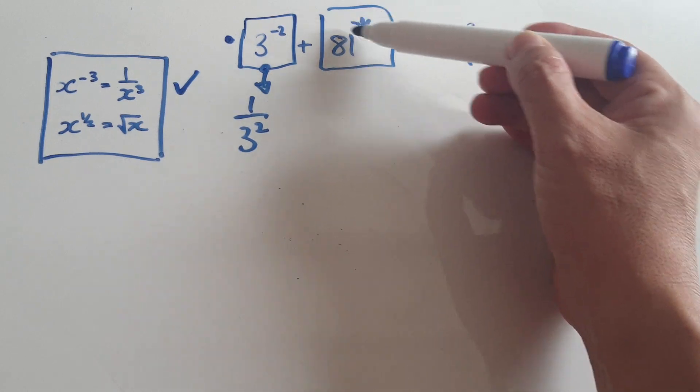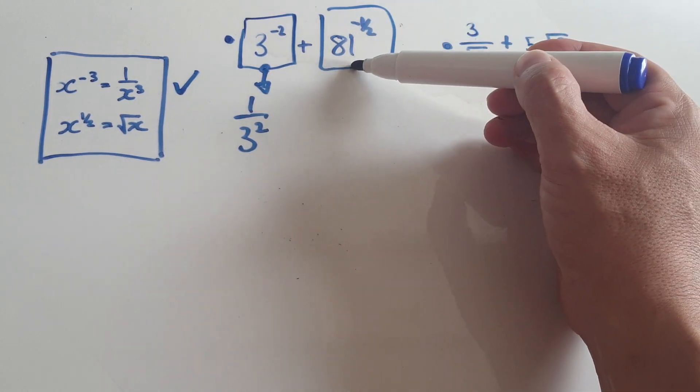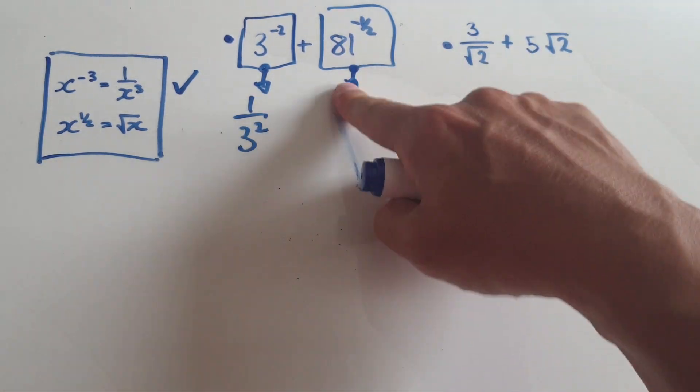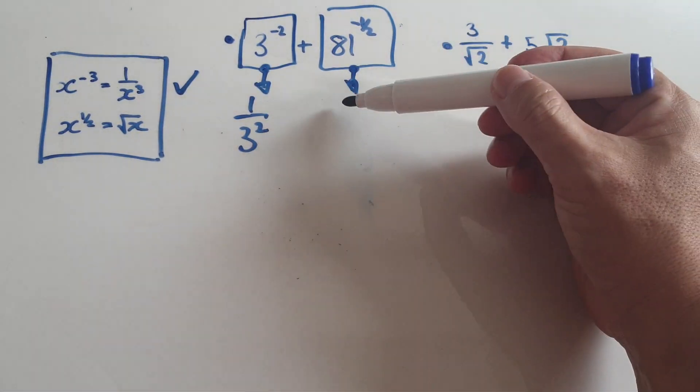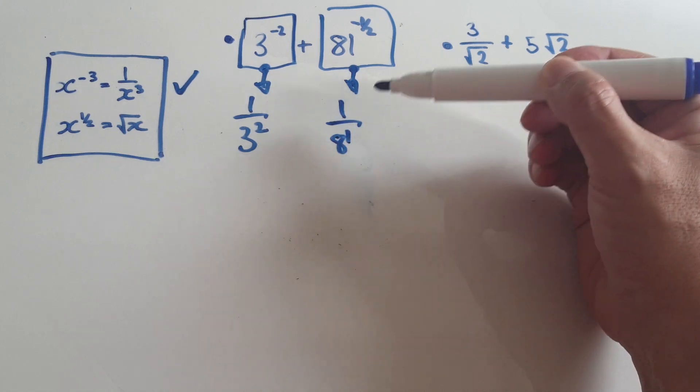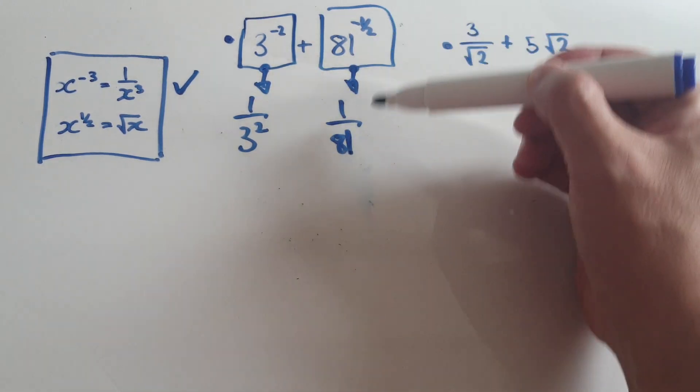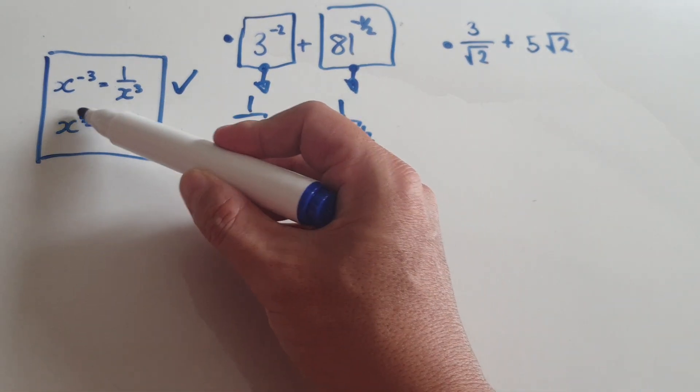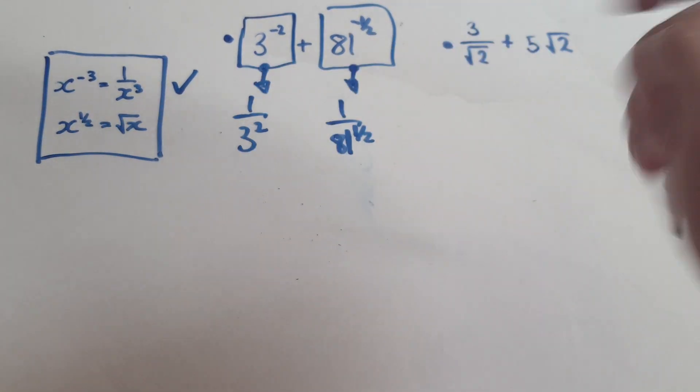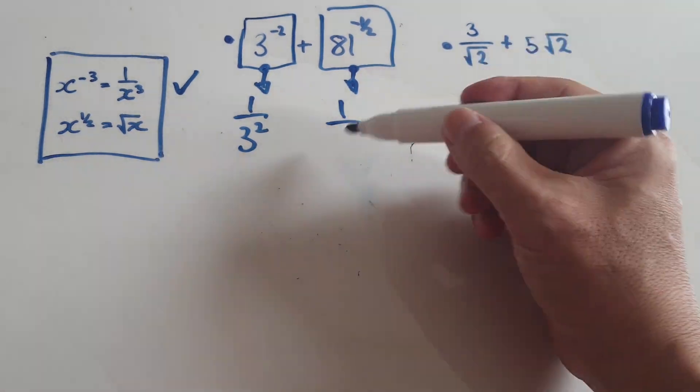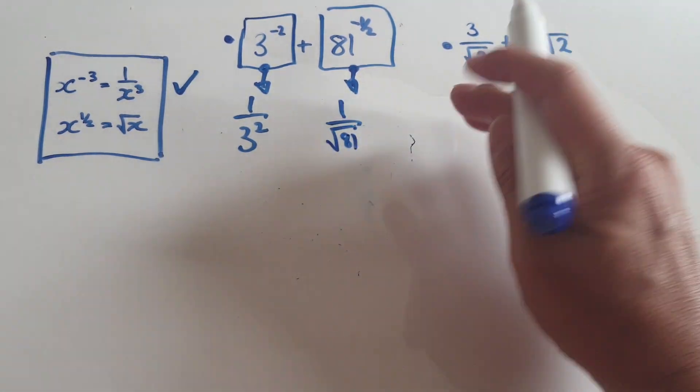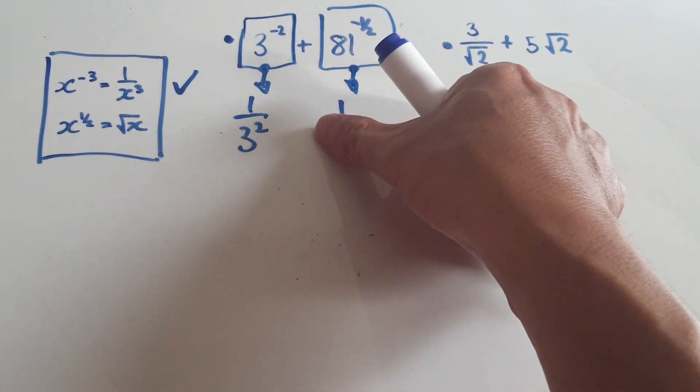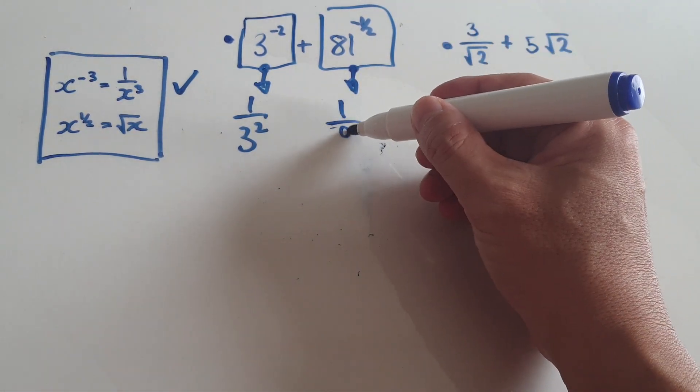Here we don't understand what it means to have a power of negative 1 half, so we would immediately jump to 1 over 81 to the power of the positive version. Now to the power of a half, that's the same as the square root, so that's really the same as square root of 81. What is the square root of 81? It is 9. 9 times 9 is 81, so that there will just become the number 9.